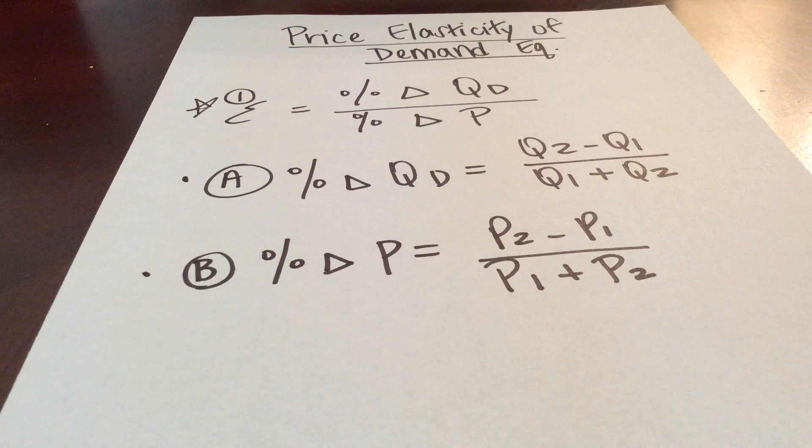So to calculate the percentage change in quantity demanded, it will be equal to Q2 minus Q1 divided by Q1 plus Q2.